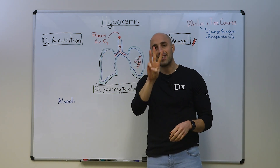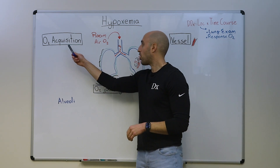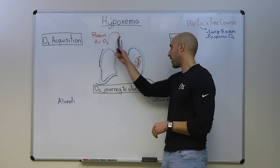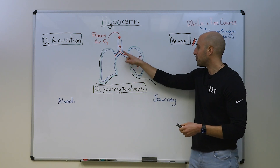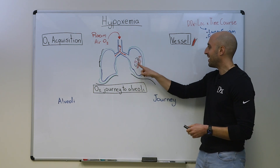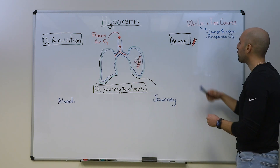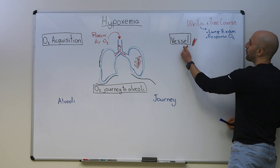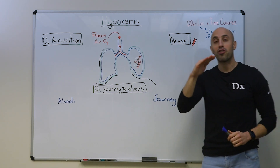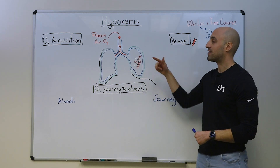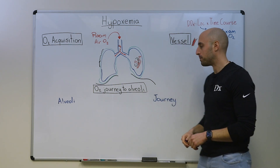This consists of three components. Number one is oxygen acquisition from the environment. Part two is oxygen's journey to the alveoli. And part three is oxygen actually diffusing from the alveoli into the bloodstream. Pathology at any one of these sites can lead to true hypoxemia.